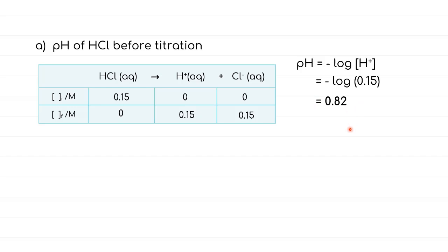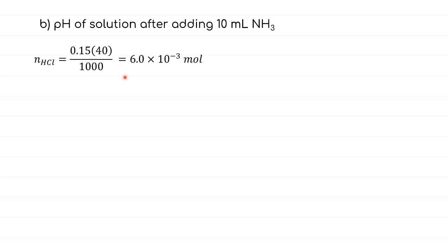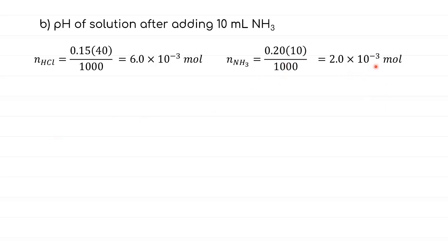We get the first coordinate: at 0 mL of NH₃, the pH is 0.82. Next, we find the pH after adding 10 mL of NH₃. The solution now contains a combination of HCl and NH₃. When adding another substance, we must first find moles because the volume change also changes concentrations. Moles of HCl = 0.15 × (40/1000) = 6.0 × 10⁻³ mol. Moles of NH₃ = 0.20 × (10/1000) = 2.0 × 10⁻³ mol.